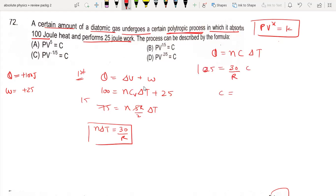The heat capacity formula for polytropic process is C equals Cv plus R/(1-x). You should remember this formula. Cv value is 5R/2, so we have 5R/2 plus R/(1-x) equals 10R/3.